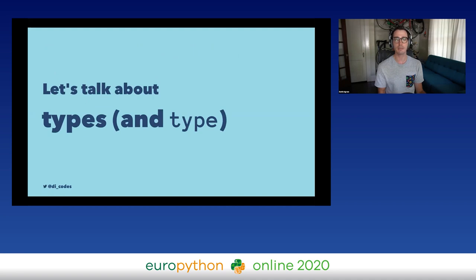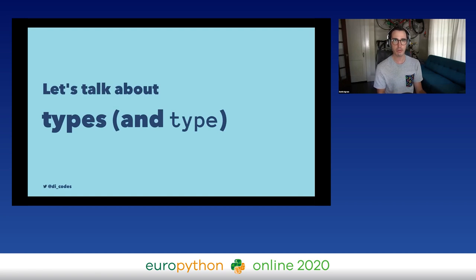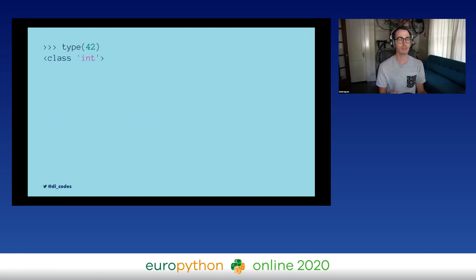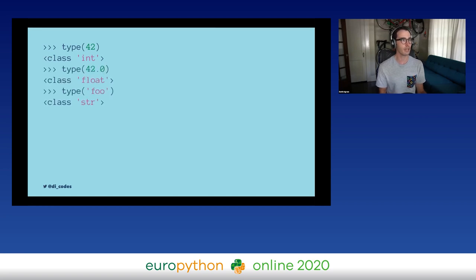Let's talk about types — specifically, `type`, the built-in keyword in Python. Type tells you what something is, what an object or variable is. If I call `type(42)`, Python will tell me it is `class int`. I can do the same thing with floats, strings, and lists.